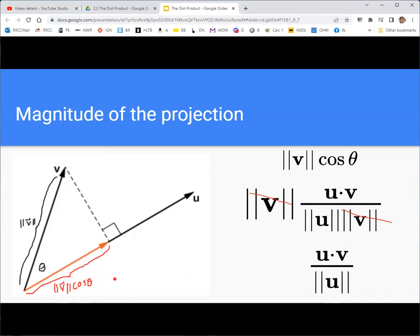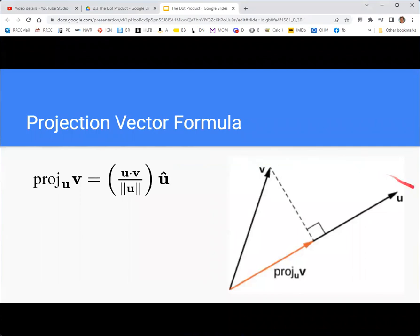What about the direction? So the direction is the same direction as the vector u, but we wouldn't use u because it has its own magnitude that would mess things up. Instead, we use the unit vector for u, which we're denoting with u hat.